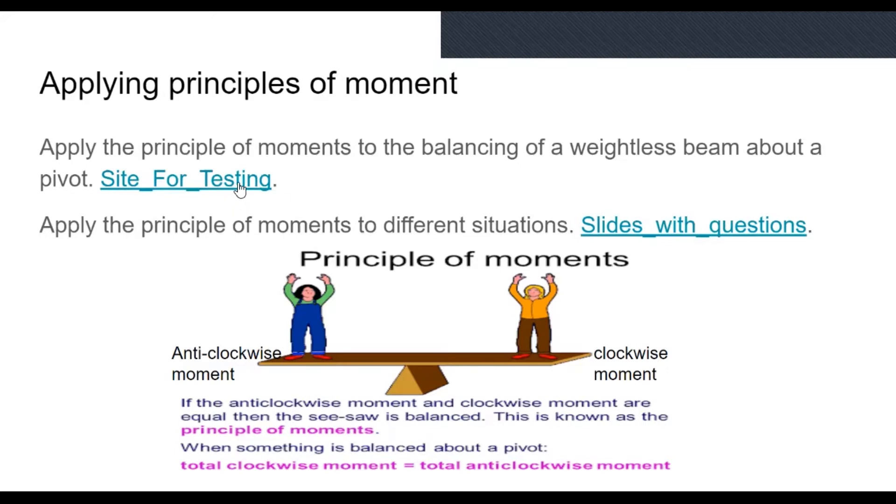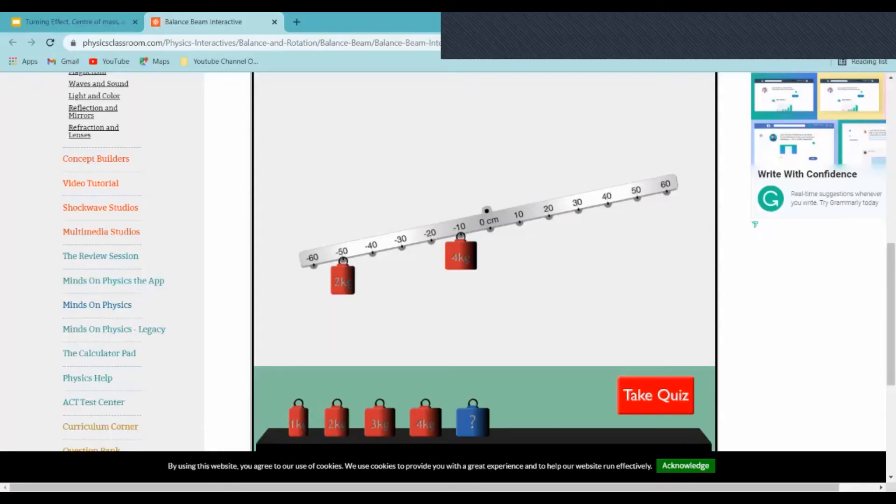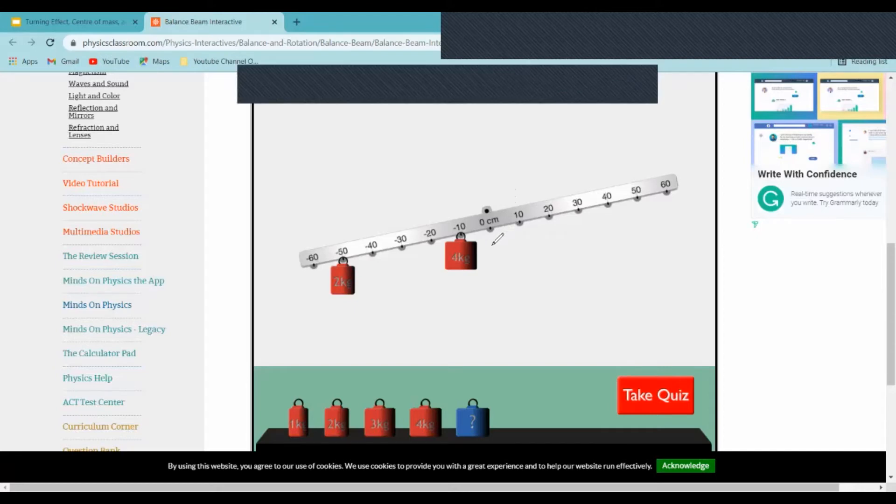I will show you an example of what you would do for the slides of questions. So here we have an example question. We have 4 kilograms 10 centimeters to the left and 2 kilograms 50 centimeters to the left. And both have a turning effect and overall tip the beam to the left. So how would we balance this?